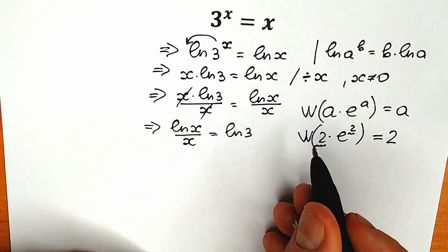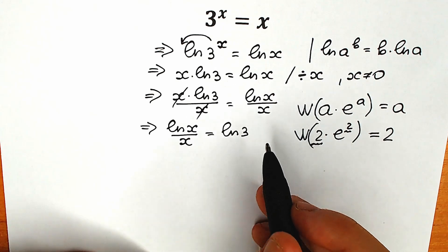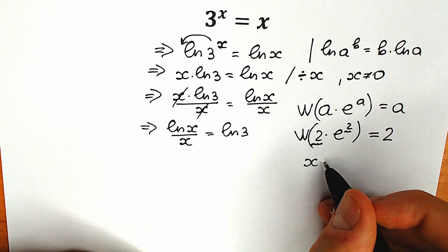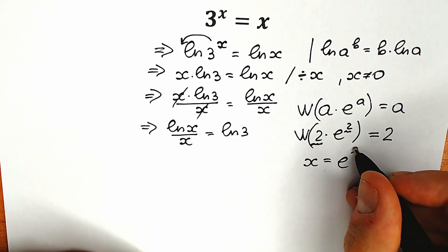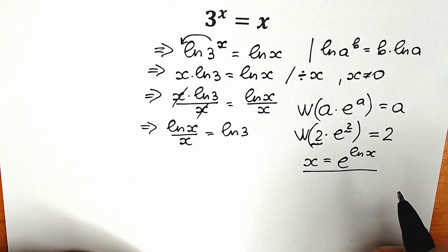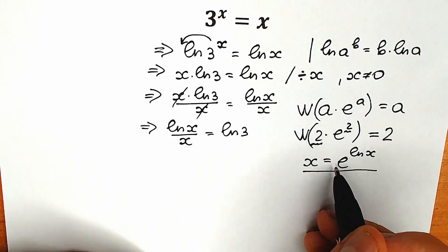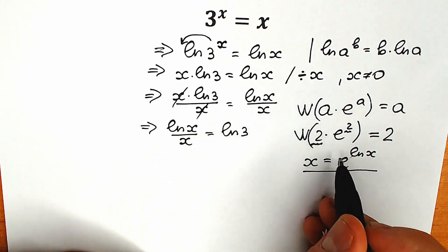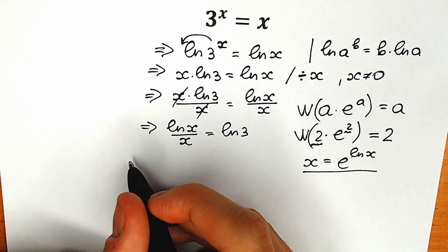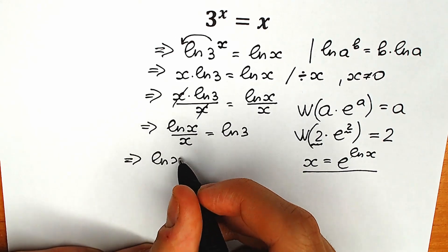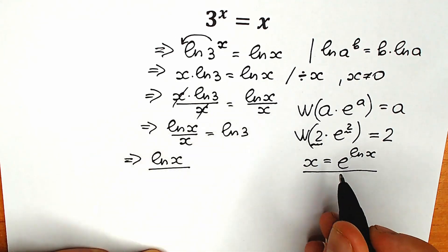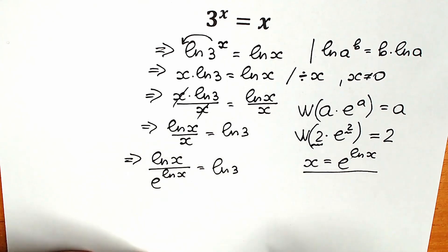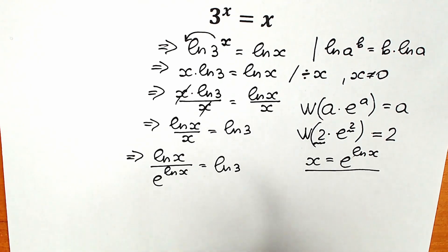Let's try to create this type of expression on our left side. First of all, we don't have e and we don't have the same expression in both places. So I suggest writing x as e to the power natural log x — this is not a substitution, but we can replace x with this equivalent expression. So in our numerator we have natural log x, and in our denominator we have e to the power natural log x, equal to natural log 3.